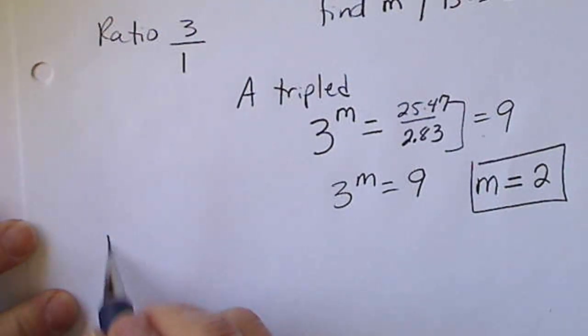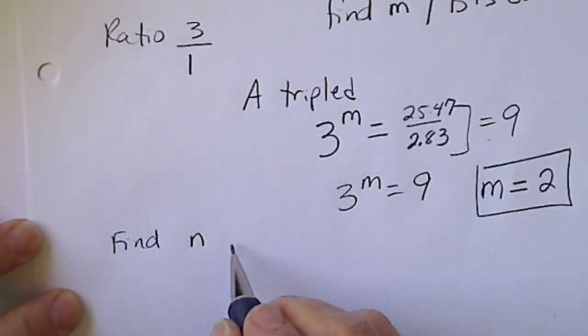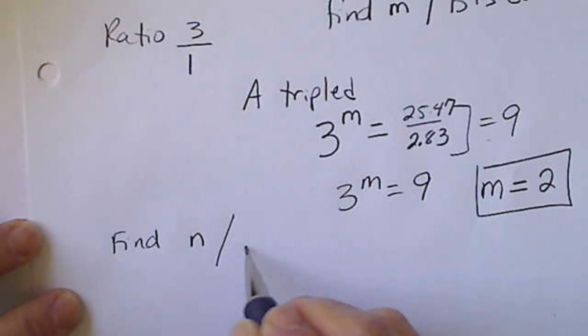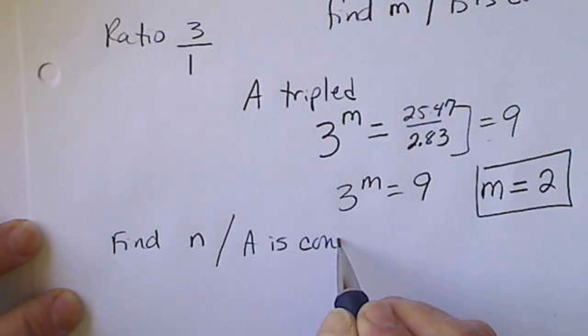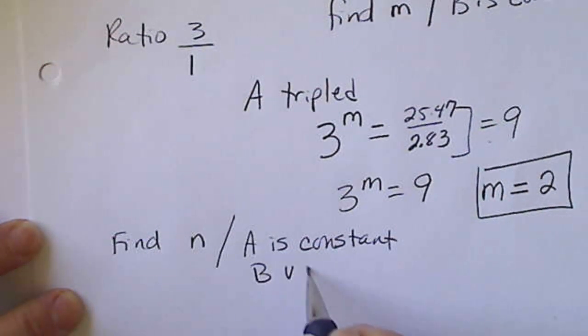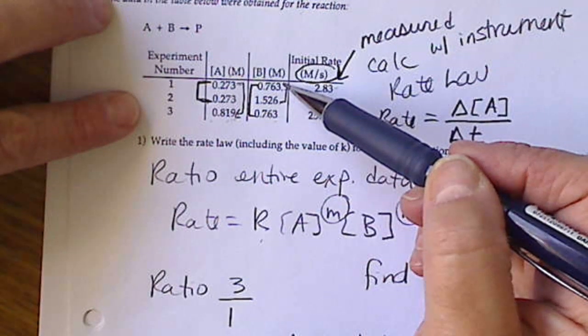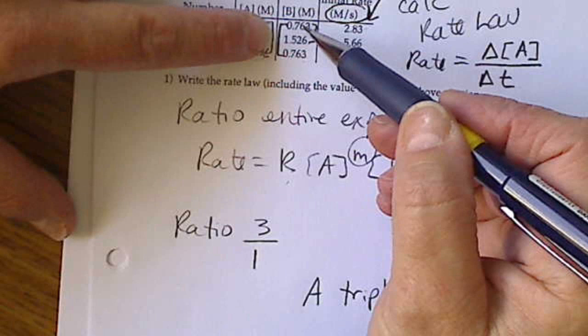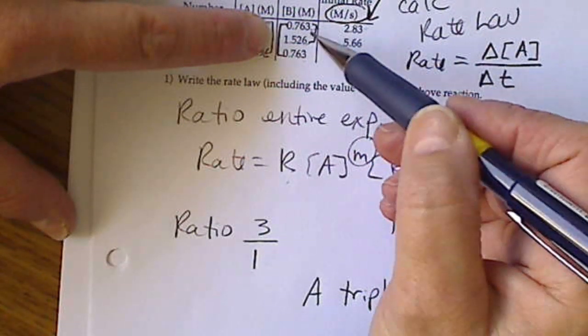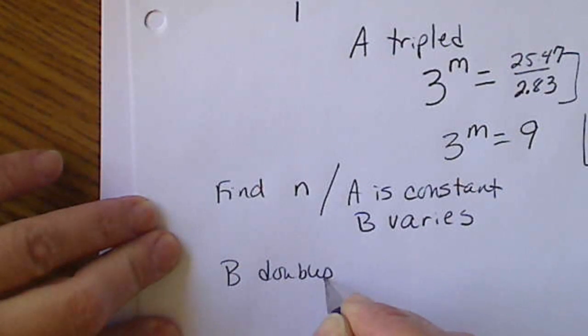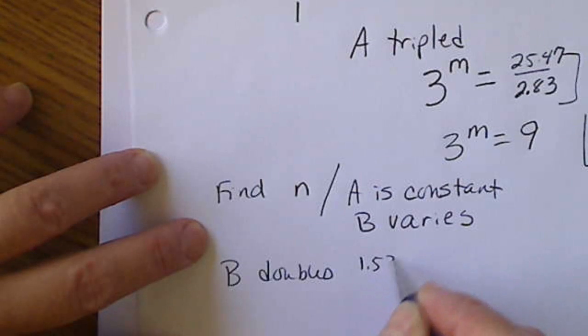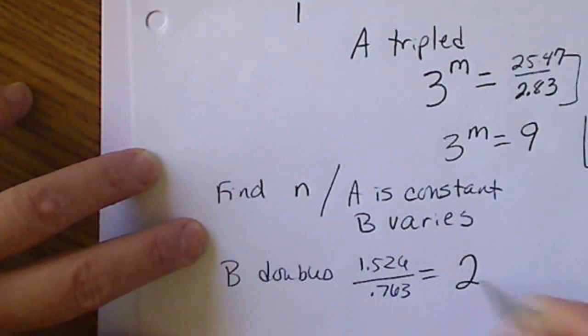Now we want to find what N equals — that's when A is constant and B varies. We look at experiments 1 and 2, where B changes and A stays the same. We can tell by looking that B doubles: 1.526 divided by 0.763 equals 2. So 2 to the N equals the ratio of the rates.